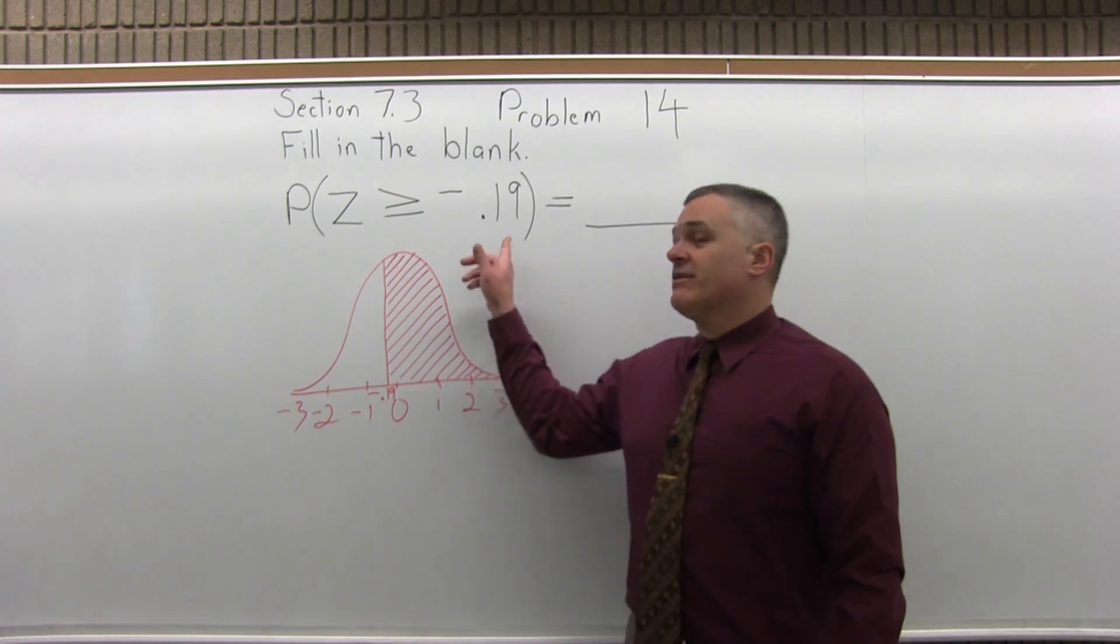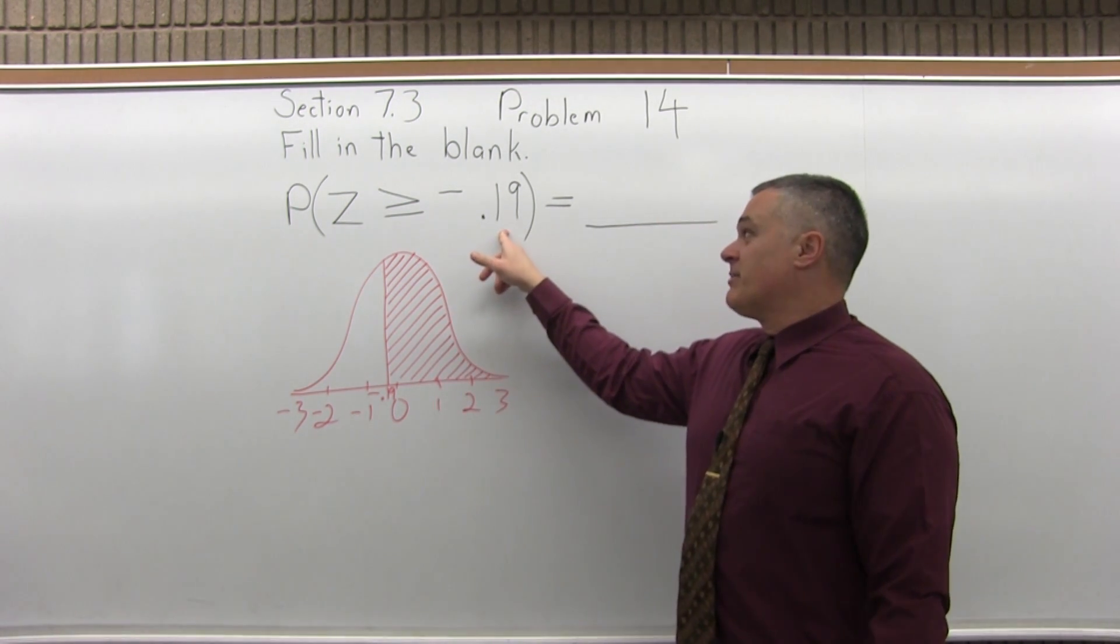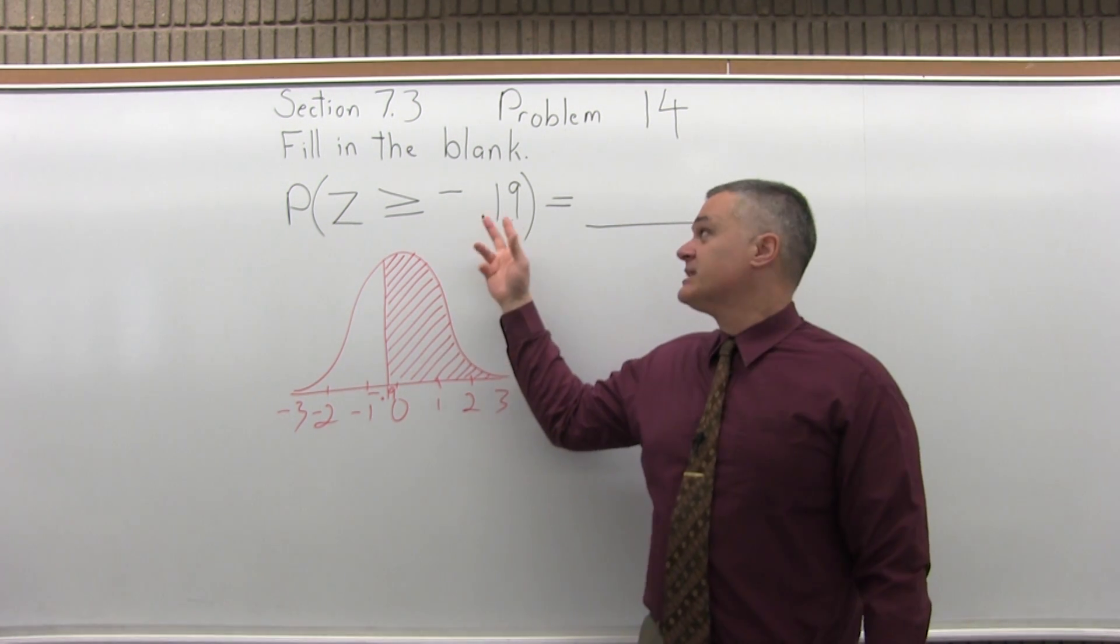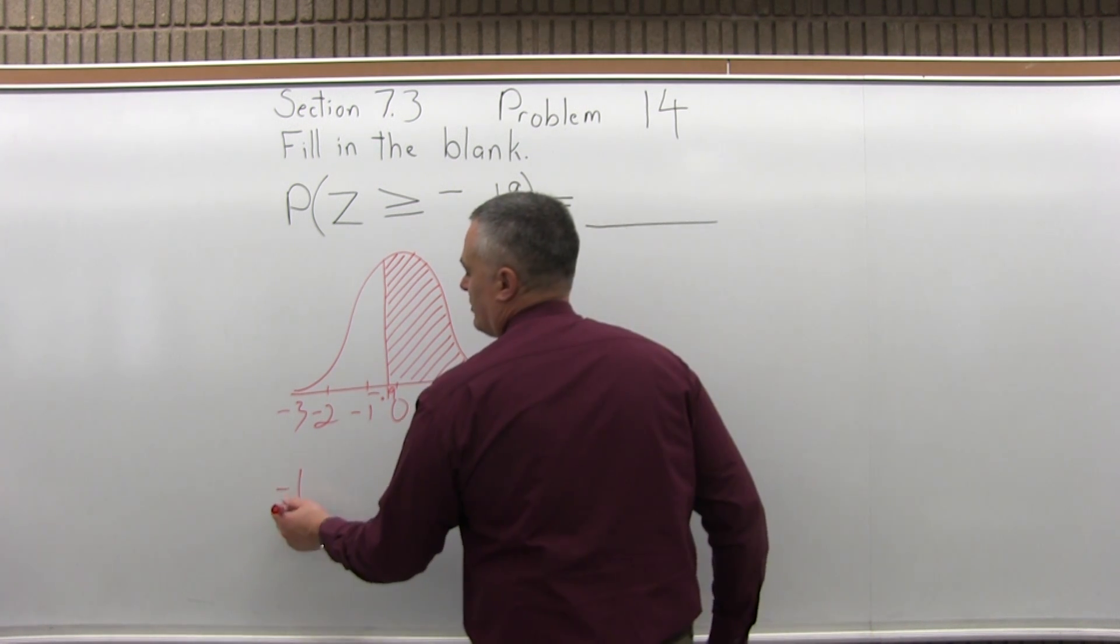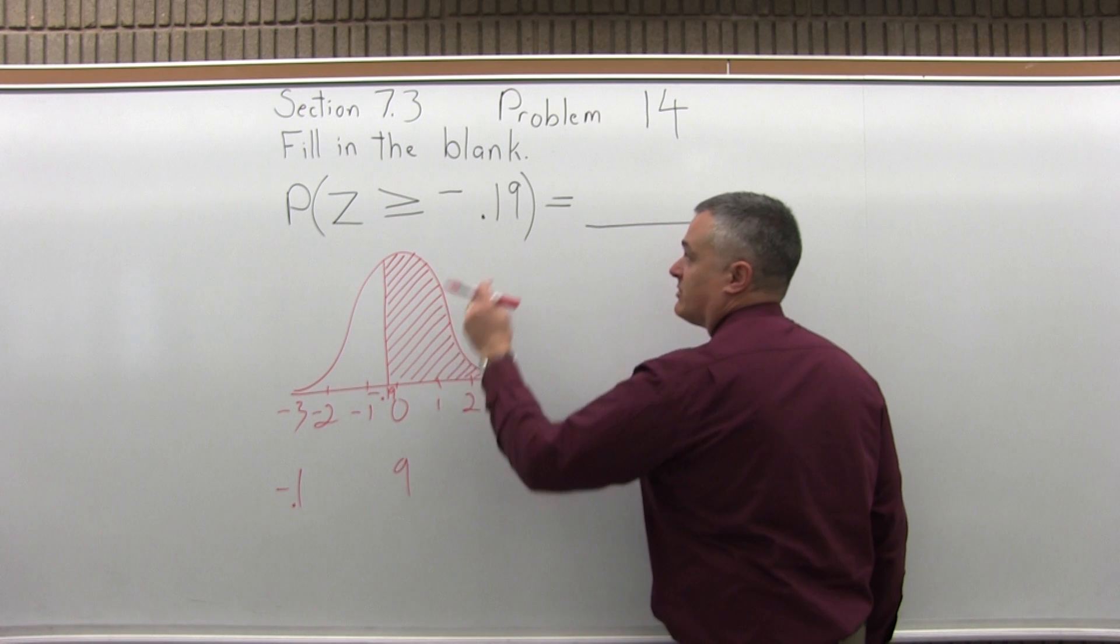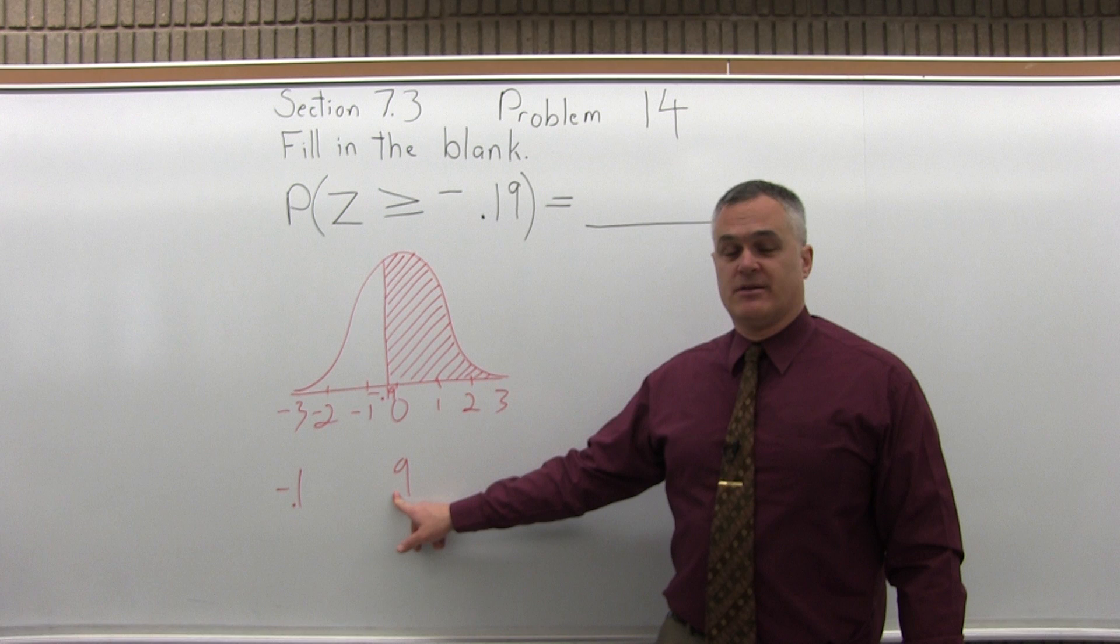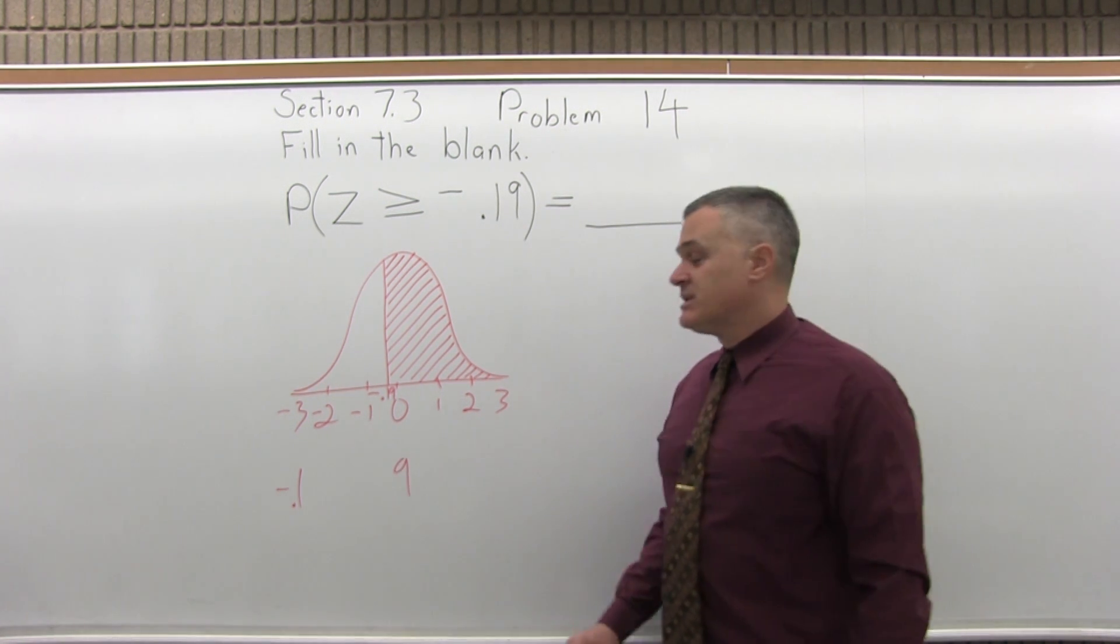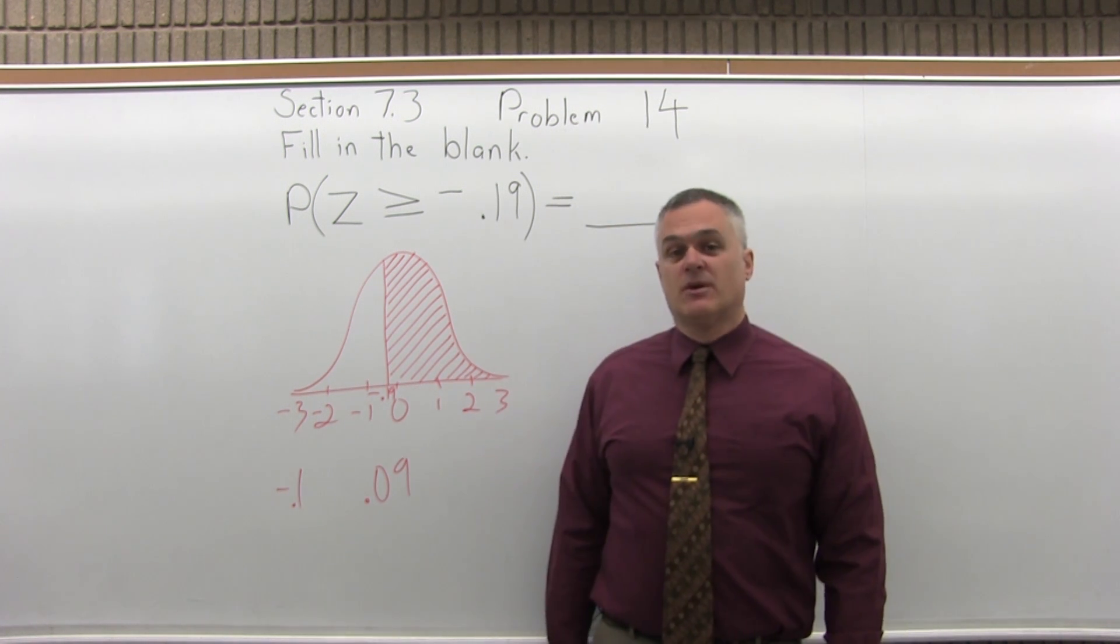Now to find that answer, I'm going to have to look up negative .19 in my standard normal chart. So to look up any value, you start by step 1, writing the number to look up so that it has two places after the decimal, which we have. Step 2 is you split the number into two parts by pulling off the rightmost digit, which is the 9. So I have a separate negative .1 and a 9. Step 3, put a .0 in front of the rightmost digit that you pulled off. So that 9 now gets written as .09.